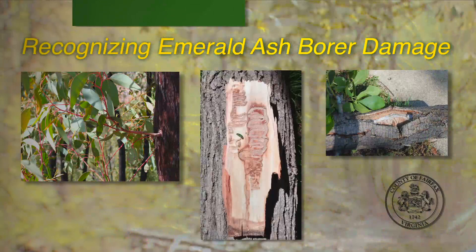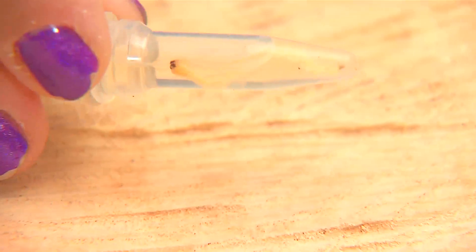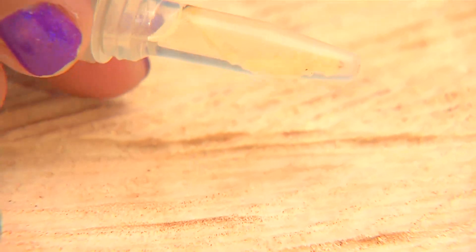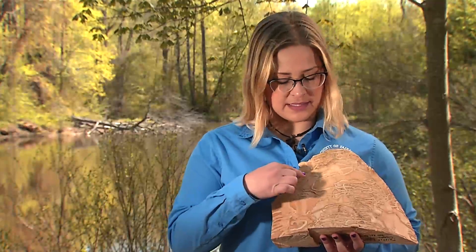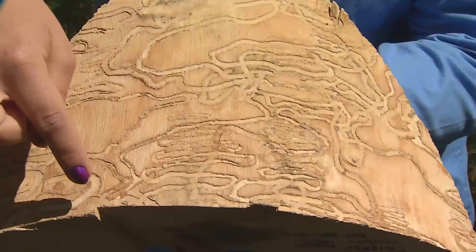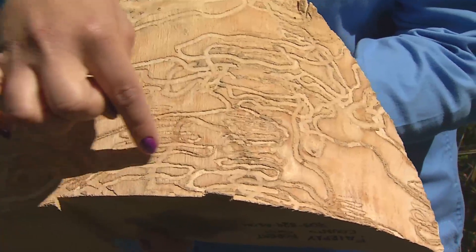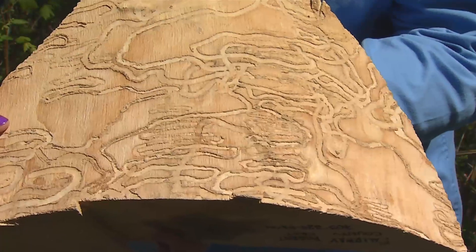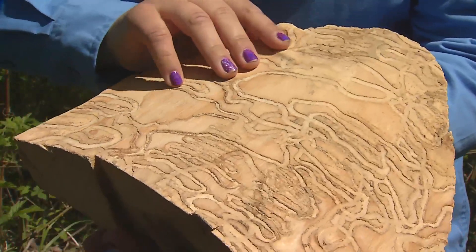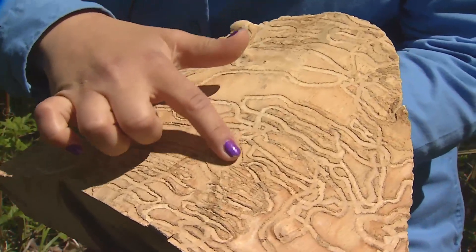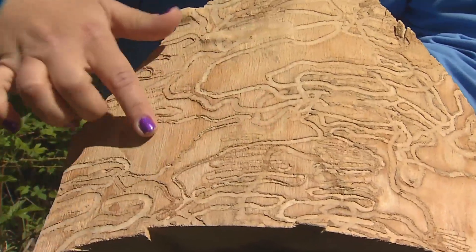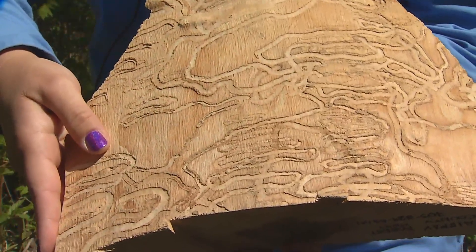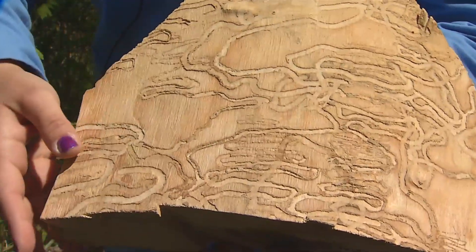The adult beetle isn't the problem — it's the larvae that does all the damage. The larvae burrow underneath the bark of the tree and create tunnels or galleries. These are diagnostic because they form a distinctive S-shape or serpentine pattern. Thousands of these larvae will infest underneath the bark, cutting off the nutrient flow to the ash tree.